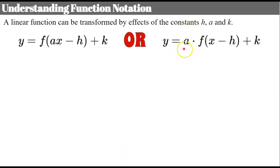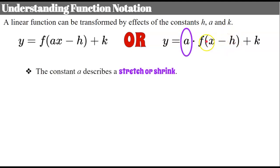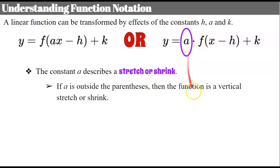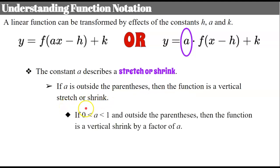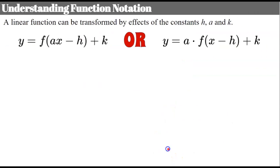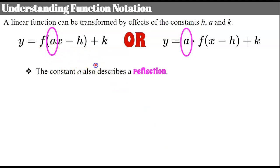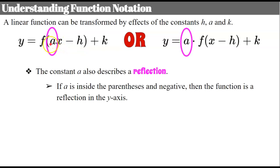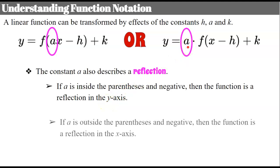Now let's talk about a being multiplied to our output — our function value. That makes it a stretch or shrink, but now it's outside the parentheses so it's a vertical stretch or shrink, and this one works as you would expect. If a is greater than 0 and less than 1 and outside the parentheses, then it is a vertical shrink by the factor of a. If a is greater than 1 and outside the parentheses, then it is a vertical stretch by a factor of a. If a is negative, we have a reflection: inside the parentheses gives a reflection in the y-axis; outside gives a reflection in the x-axis.